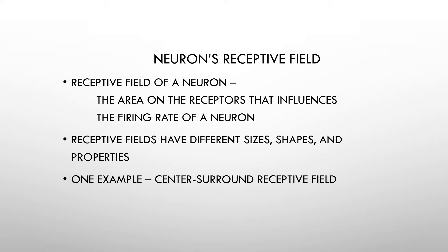The receptive field of a neuron is the area on the receptors that influences the firing rate of a neuron. So if I'm a receptor and I'm firing, whether I have an excitatory influence or an inhibitory influence on the neuron down the line, then I am part of that neuron's receptive field. Just remember that whether that influence is excitatory or inhibitory, either way, if I'm having an influence, I'm part of that neuron's receptive field.